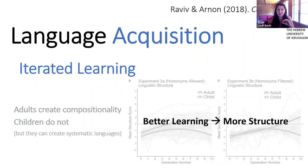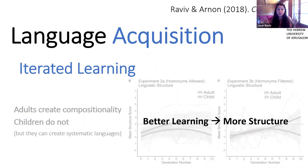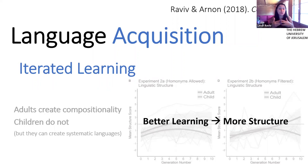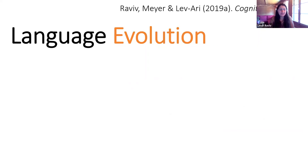More importantly, we used additional analyses to show that the difference between children and adults in this paradigm was related to how well they learned their input language. Participants who learned the input languages better — whether children or adults — were also more likely to introduce more structure to their output. This strengthens the idea that you have to first learn your language and have some biases before you can introduce or regularize any structure.